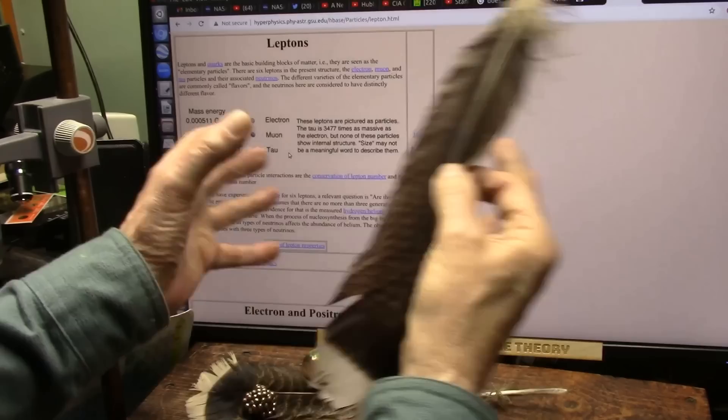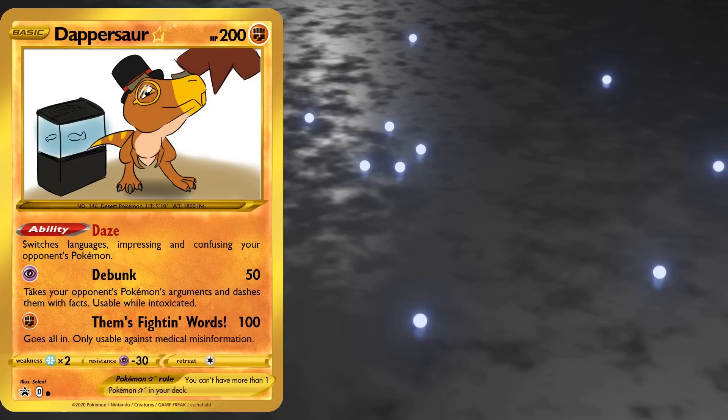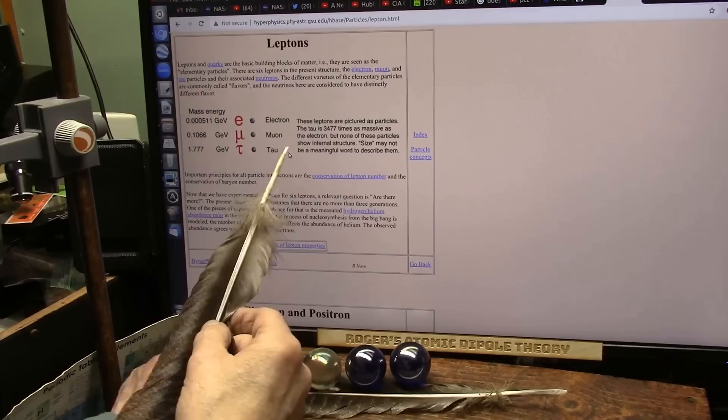The electron, it's a field structure. I don't know how to explain it other than that. Yes, it is. That's what particles are in the first place.